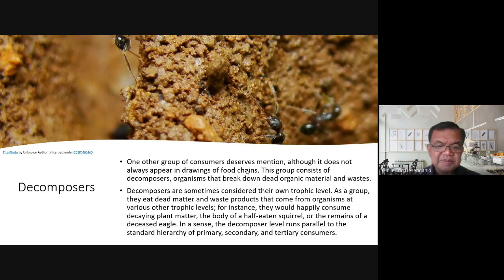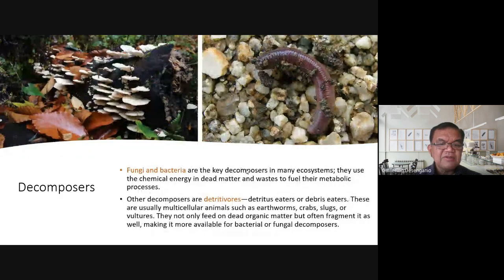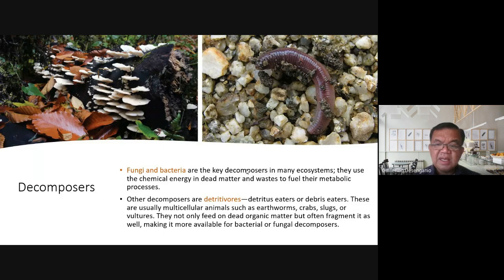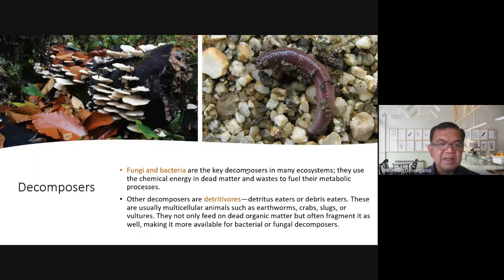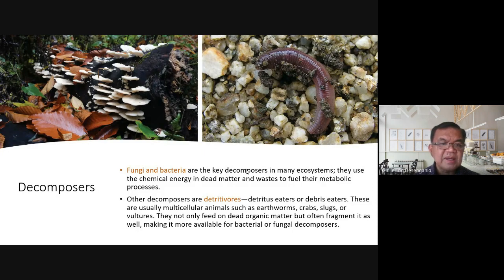Fungi and bacteria are key decomposers in many ecosystems. They use chemical energy in dead matter and waste to fuel their metabolic processes. Mushrooms, for example, can be grown artificially by preparing their food through a series of procedures — inducing decomposition of materials like hay to create the food source for mushroom growth.